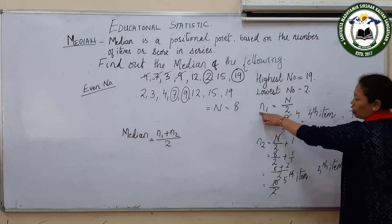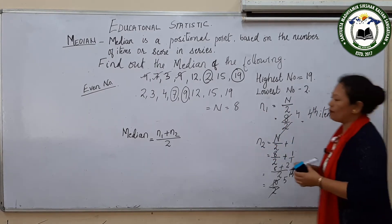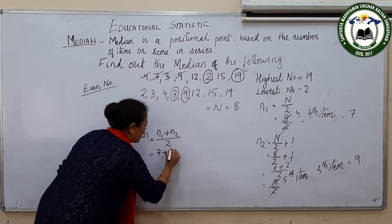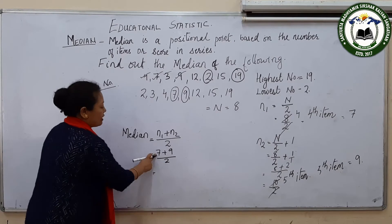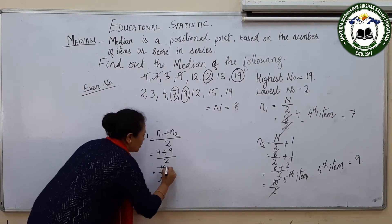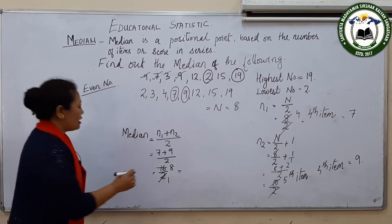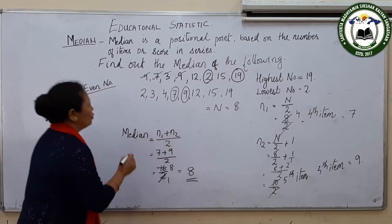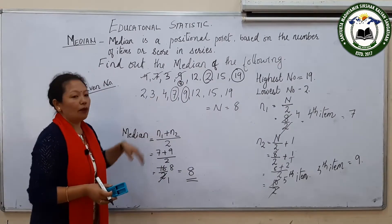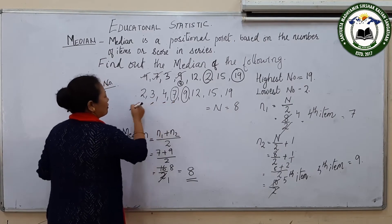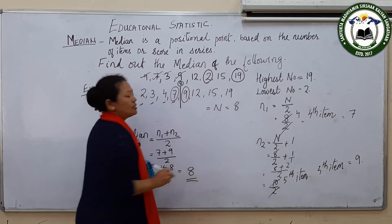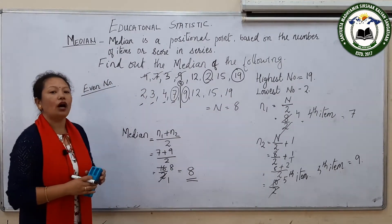Now I have N1 = 7 and N2 = 9. Applying the formula: (N1 + N2)/2 = (7+9)/2 = 16/2 = 8. So my final answer is 8. The median is 8, below and above which lie equal numbers — 4 numbers above and 4 numbers below. This is the way to find out the median.